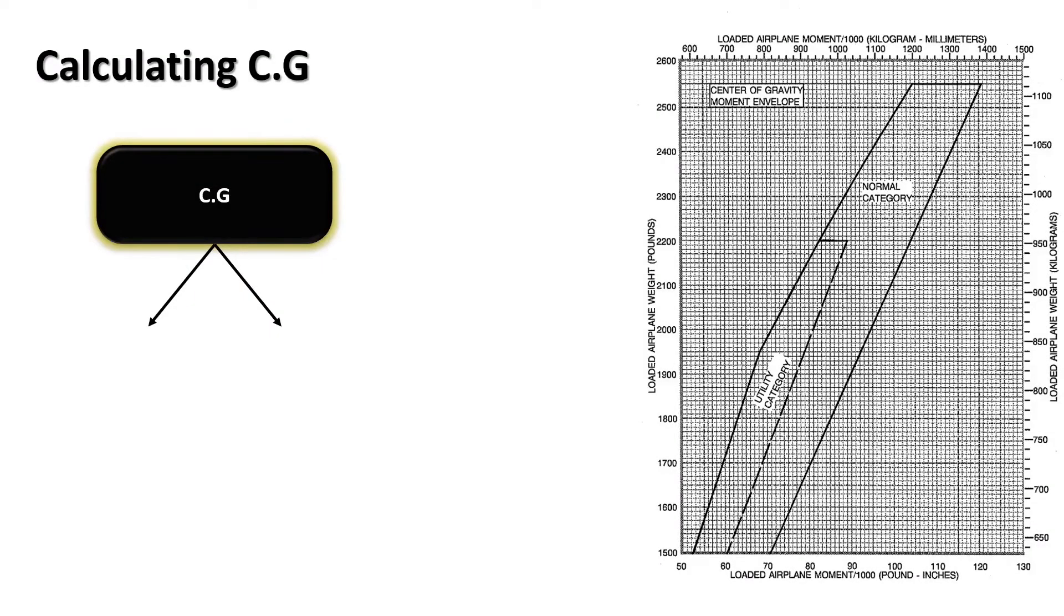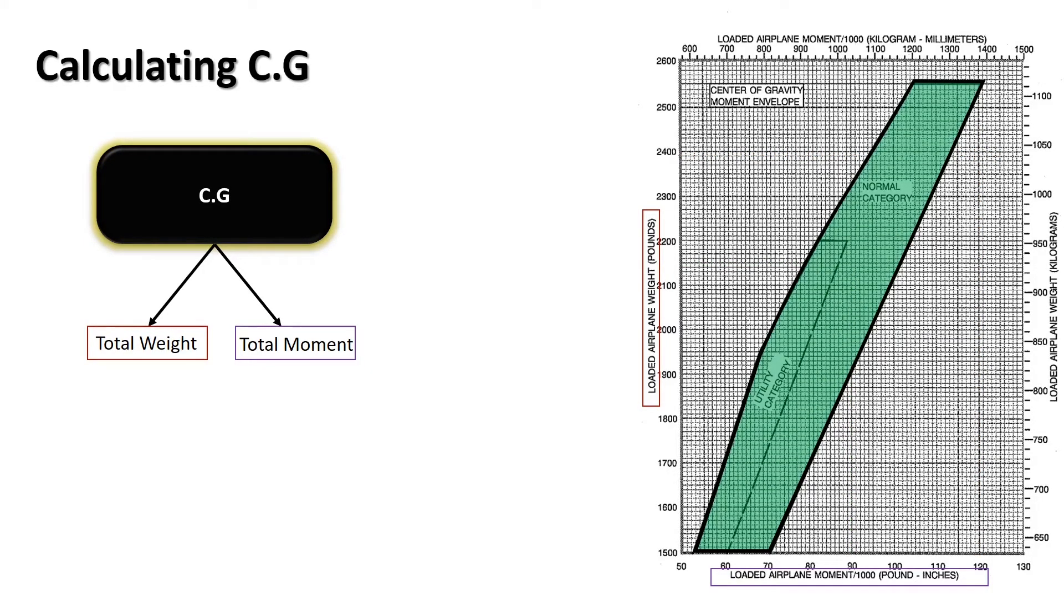To calculate CG we must determine two variables, total weight and total moment. By plotting the location of these on an envelope graph we can evaluate whether the aircraft is safe to fly. The envelope is the place where the aircraft can be balanced while still having favourable flight characteristics.